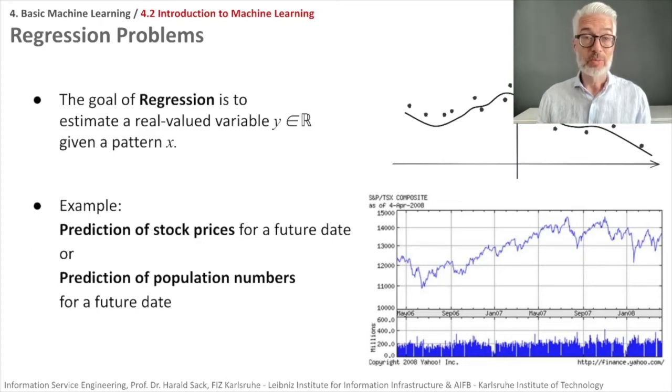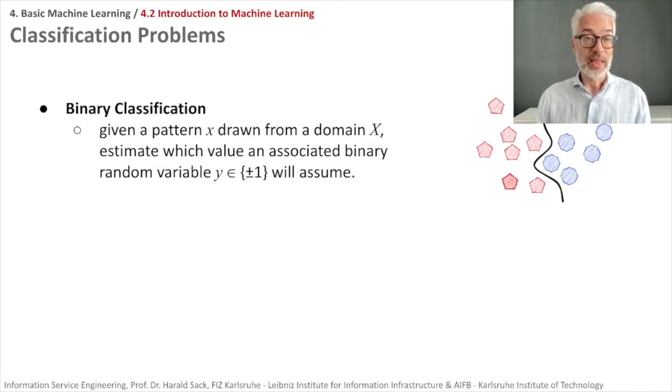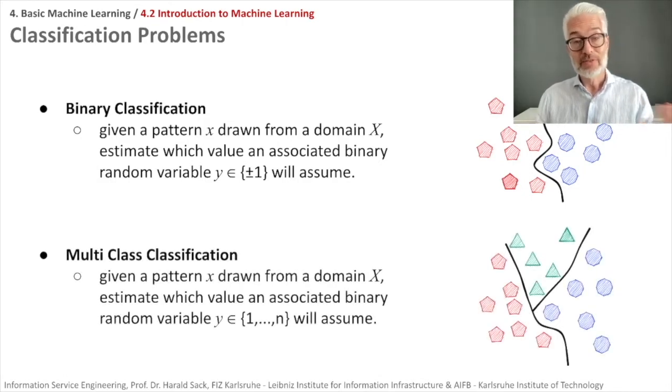Classification problems: given a pattern x drawn from a specific domain, we want to estimate which value an associated binary random variable—yes or no, 1 or -1, 1 or 0—will assume. This is binary classification, a yes or no decision. You can also do multi-class classification where you have multiple classes, not only two. The value y can be between 1 and a specific number n.